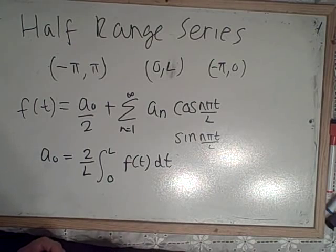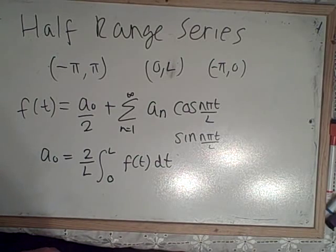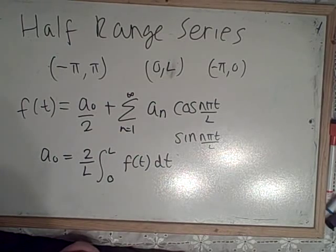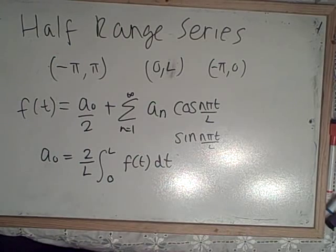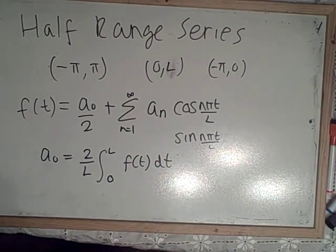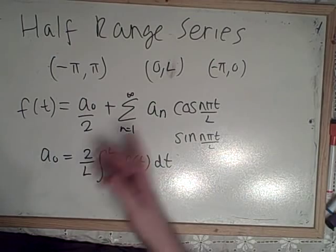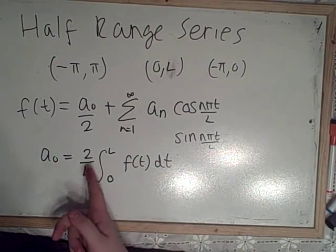So this is similar to our normal Fourier series, where we have 1 over pi, or in this case 1 over l, and then the integration of the function f of t, but we've multiplied it by 2. To remember this, you can just generally say you need two halves to make a whole, so we've got two of them.